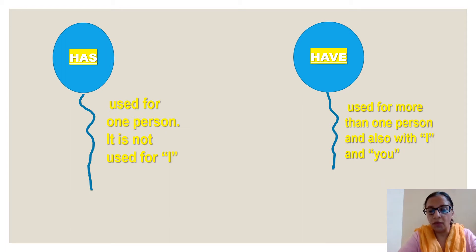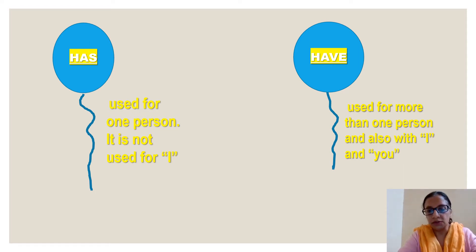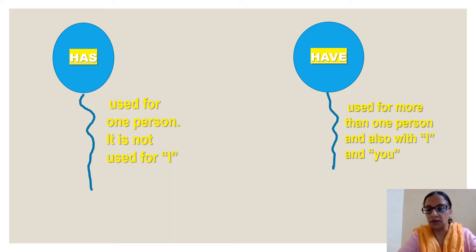Have is used for more than one person. When we have to talk about more than one person, we will use have, not has. And also with I and you, we use have. So to repeat: has is used only with a single person, and have is used with more than one person, and also with I and you.